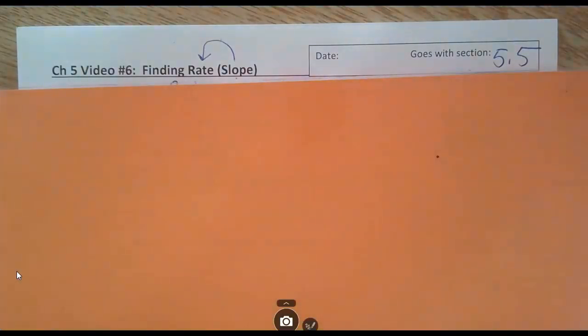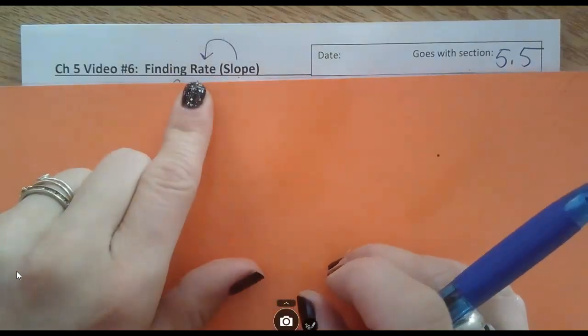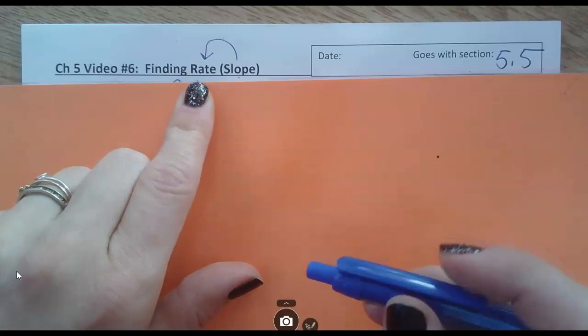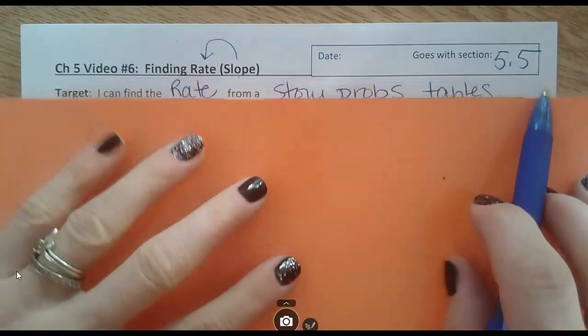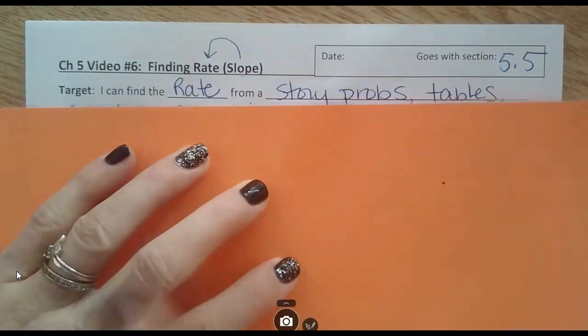Okay, this is video six for chapter five. It's all about slope, but slope is just another way of saying the rate. So really, we're finding rate, and it goes with section 5.5 in your book. Our target is, can we find the rate in any different kind of problem?